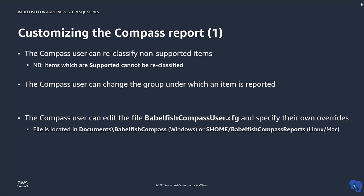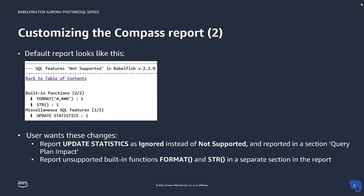Such customizations are made by editing the file BabelfishCompassUser.cfg, which is located in the root of the report directory. Here we see an example of a default Compass report. Let's say we want to reclassify update statistics as ignored, and we want to report it under a section header of QueryPlanImpact instead of Miscellaneous SQL features as currently. In addition, we want to report the not currently supported functions format in str under a different section header as well.